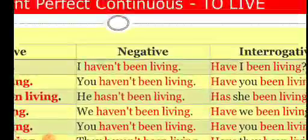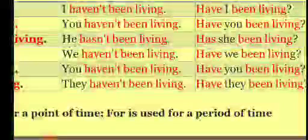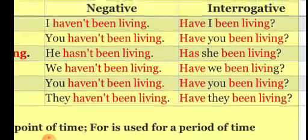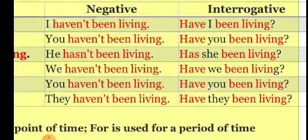For negative: I haven't been living. You haven't been living. He hasn't been living. We haven't been living. You haven't been living. They haven't been living. For interrogative: Have I been living? Have you been living? Has she been living? Have we been living? Have you been living? Have they been living?